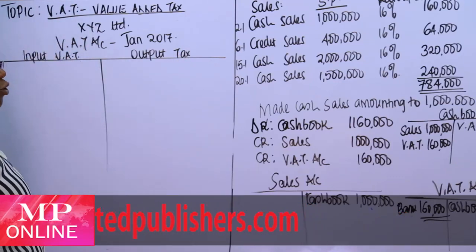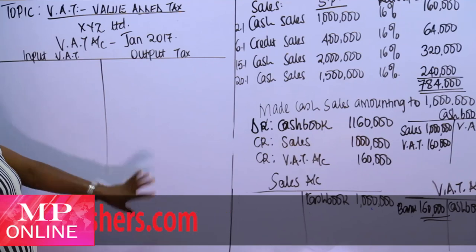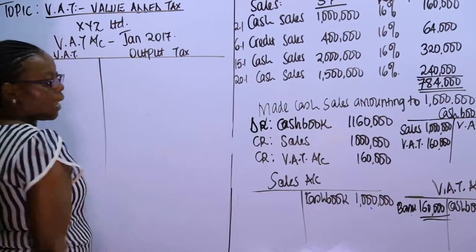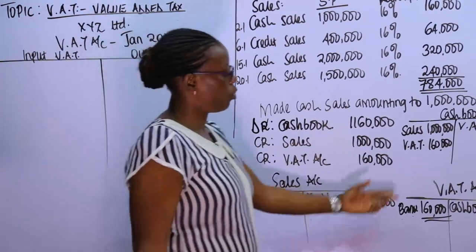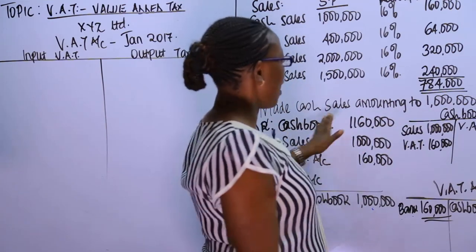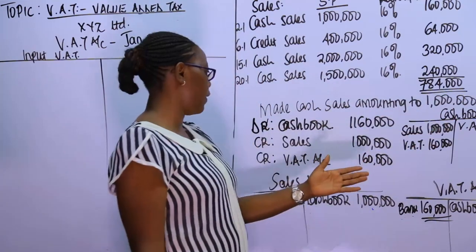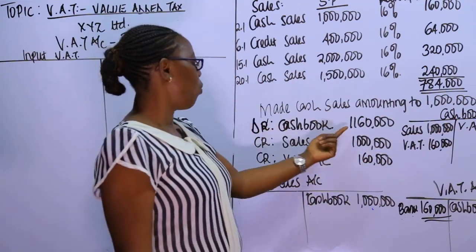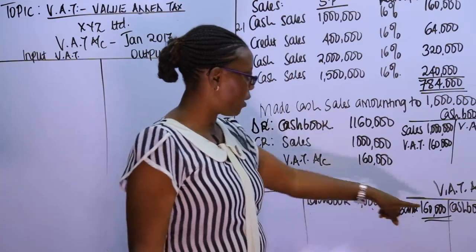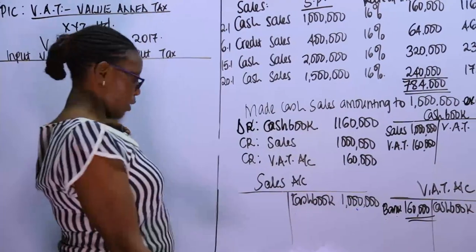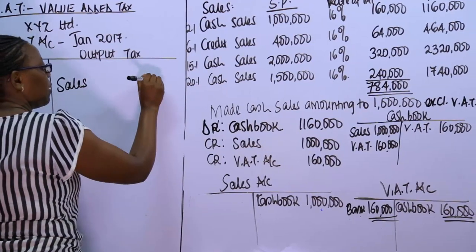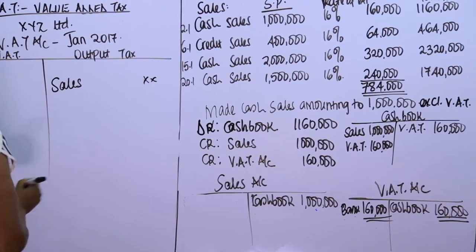The two key issues in VAT are supplies (sales) and purchases. Sales go on the output side because we are collecting VAT from customers. For example, cash sales amounting to 1 million exclusive of VAT means we collected 1.16 million — we credit sales and credit the VAT account $160,000. Purchases go on the input side.